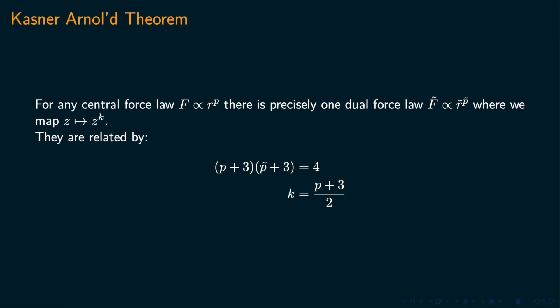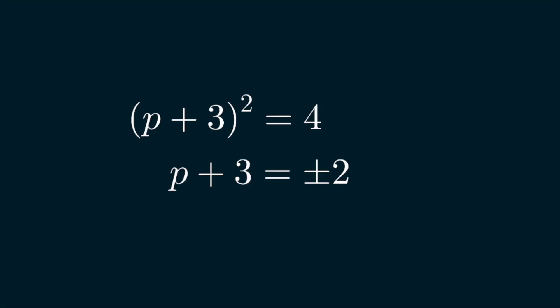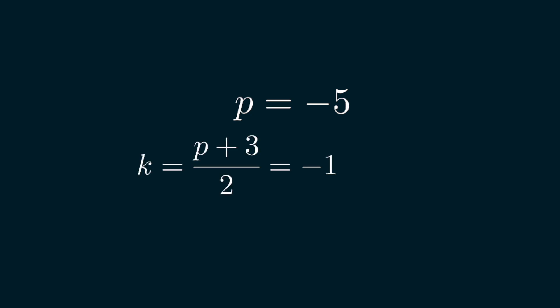Now that we have the Kastner-Arnold theorem, we can see if there's a force law where the orbits are self-dual, i.e. they map to themselves under this dual process. We get that p equals p tilde equals minus 5, and k equals minus 1.